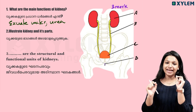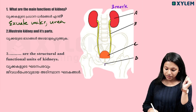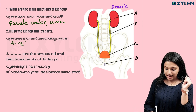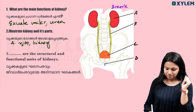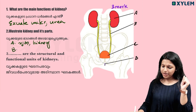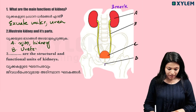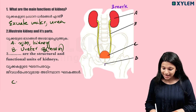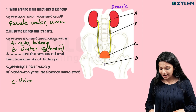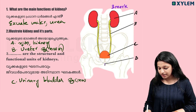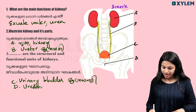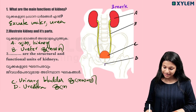Now let's illustrate the kidney and its parts. B is called the ureter. C is called the urinary bladder. D is called the urethra.